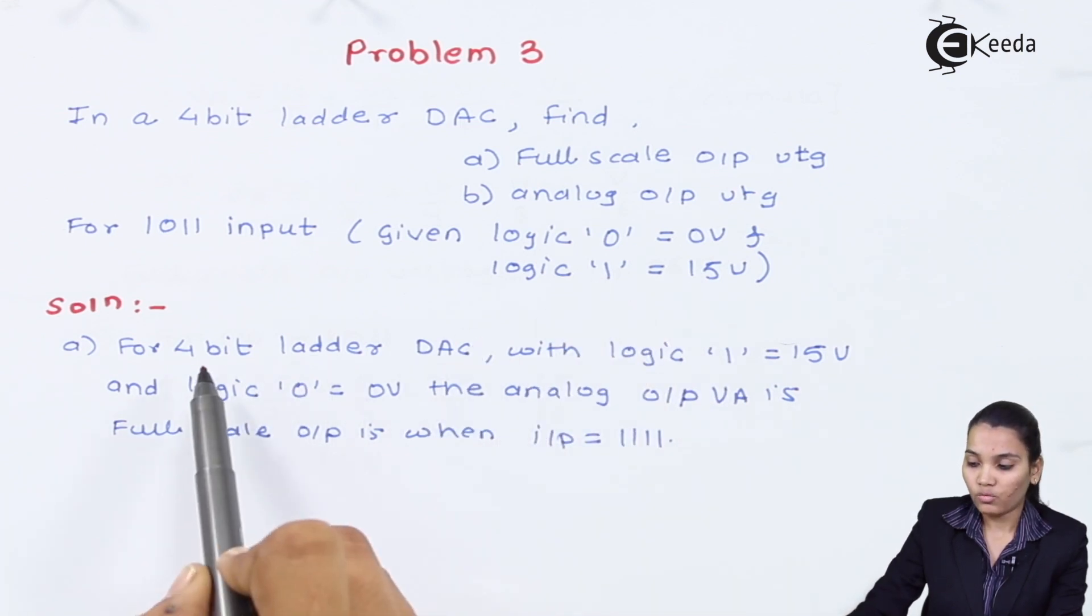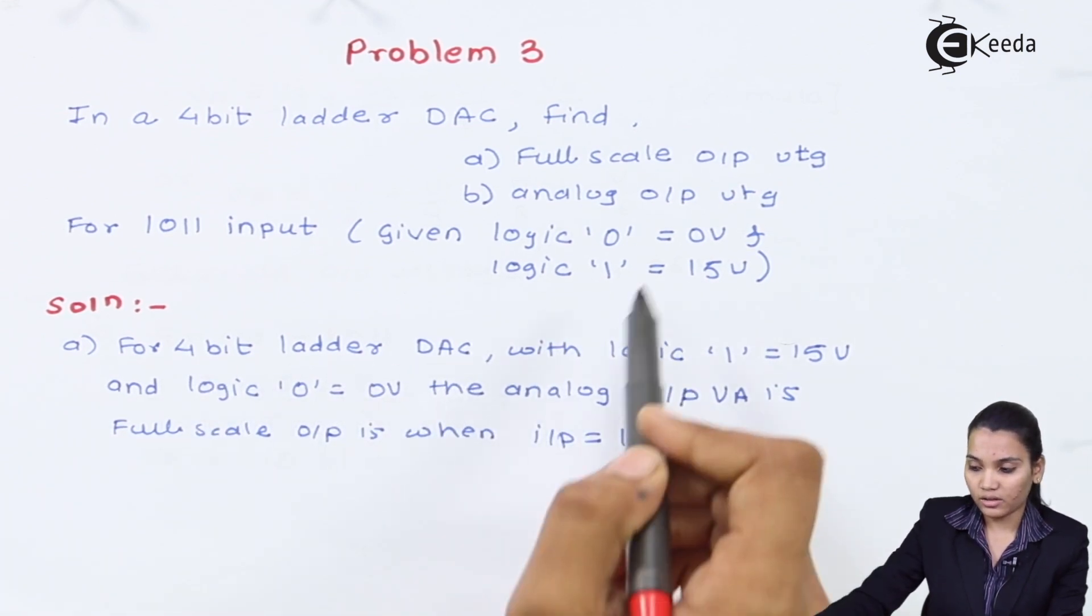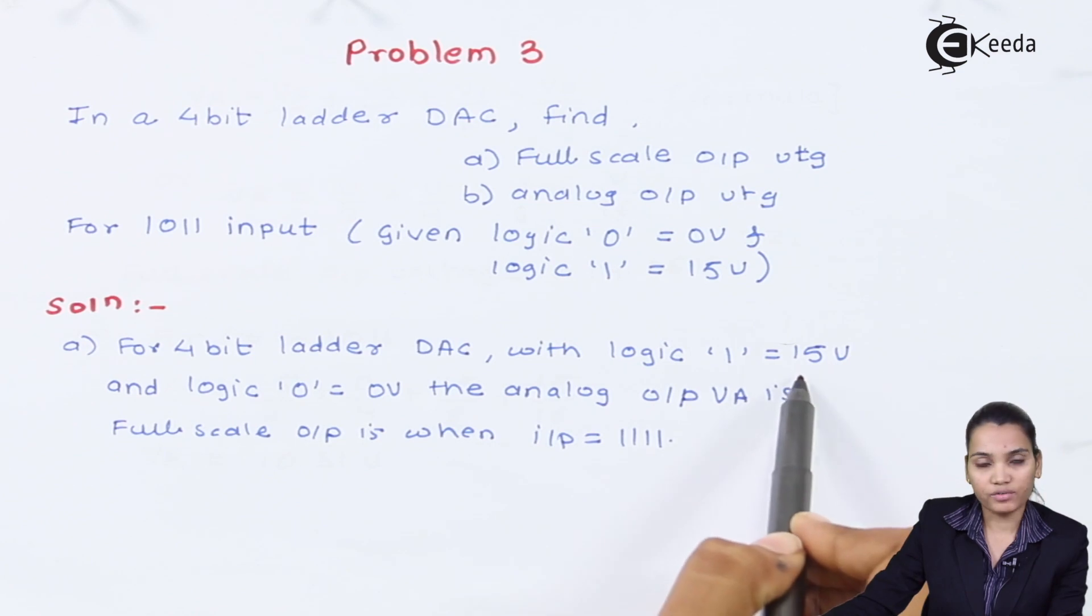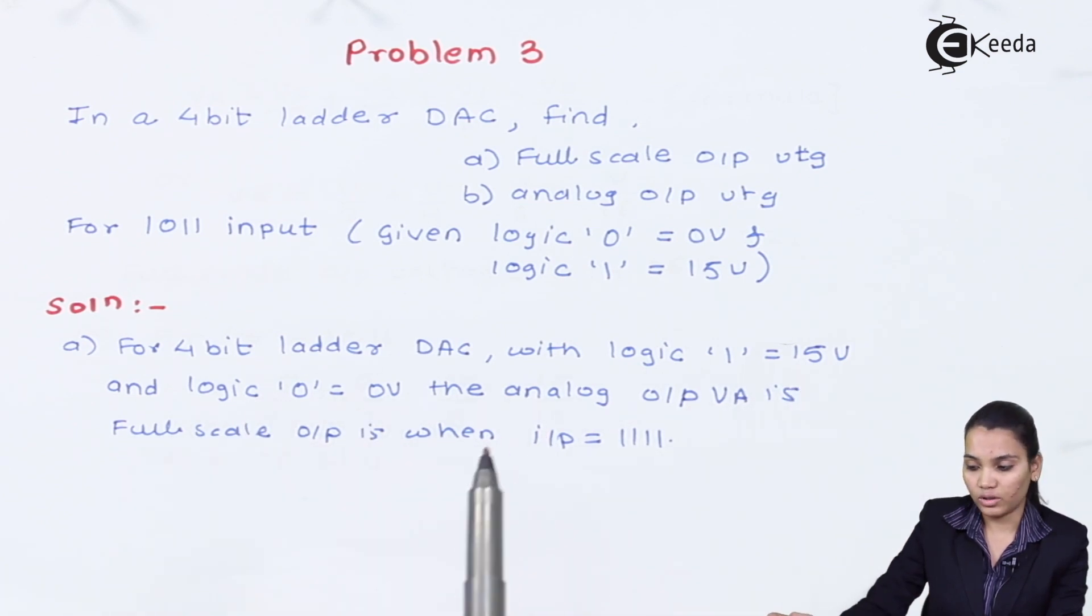So let's start with the solution. For a 4-bit ladder DAC network, logic 1 is given as 15 volts and logic 0 is given as 0 volts.